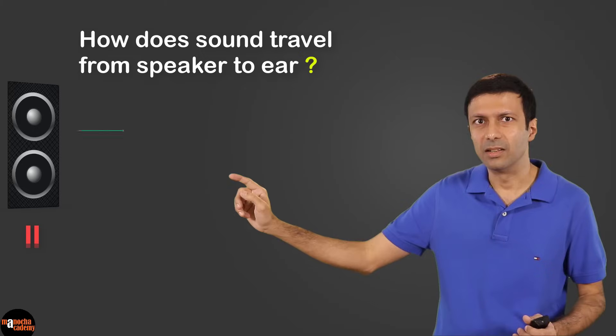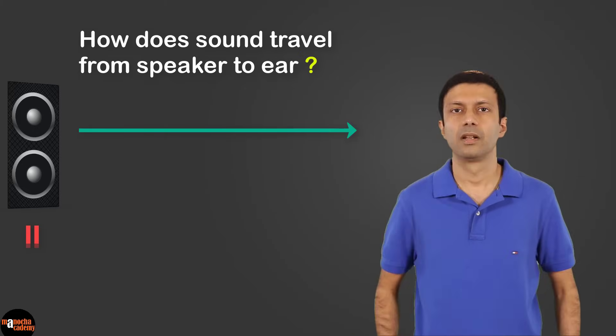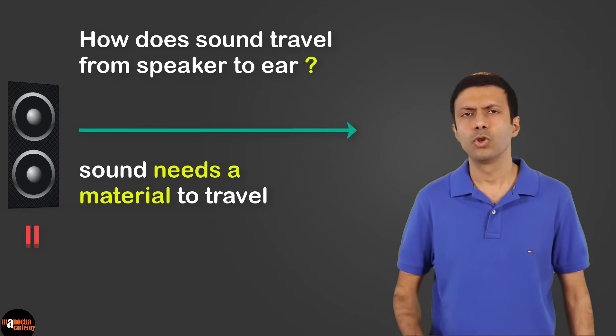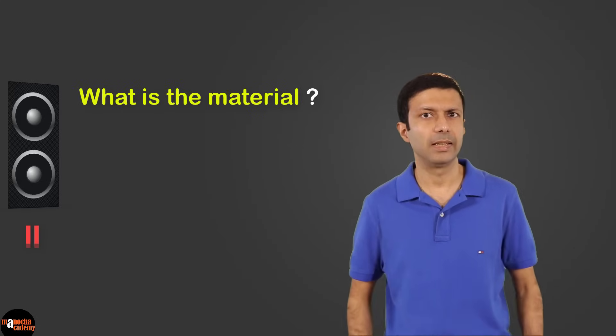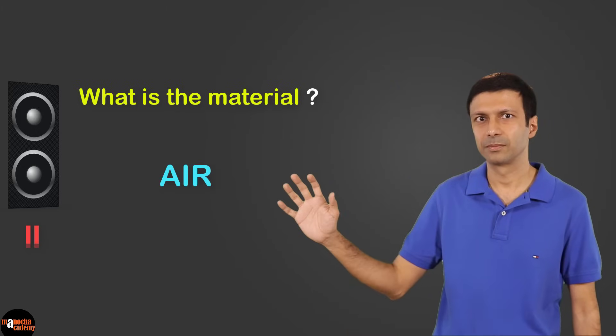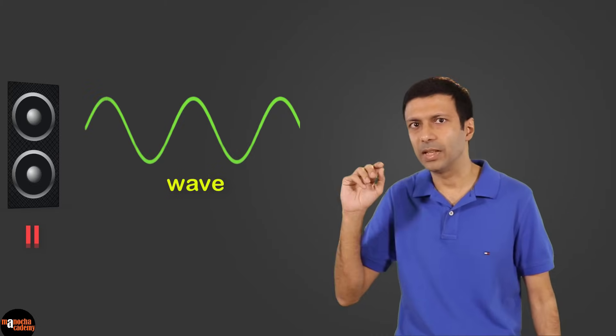Let's say you're relaxing and listening to music from your music system. The question we are looking at is: how is the sound from the speaker traveling to your ear? Sound is a form of energy that needs a material to travel. In this case, the material is air — sound is traveling as a wave, or a disturbance of the air particles.